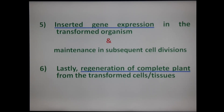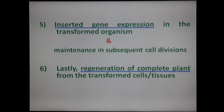In the last step, after trait selection, identification of gene, gene isolation, regulatory region identification, isolated gene transfer, and inserted gene expression in the transformed organisms — finally, there is regeneration of complete plant from the transformed cells or transformed tissues.